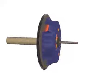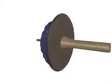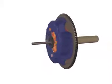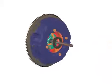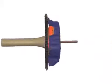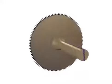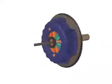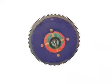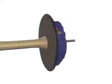It is a mechanism to connect and disconnect the engine power to the driving wheels as per the road and load conditions. It is located between the engine and gearbox. The various types of clutches used in the automobile depend upon the type and use of vehicles.